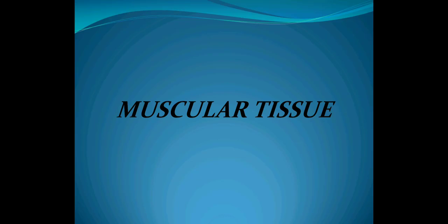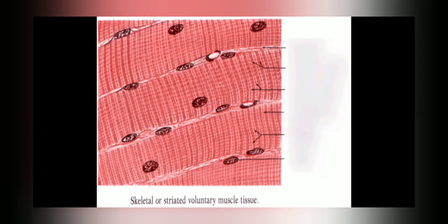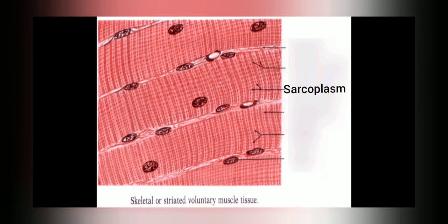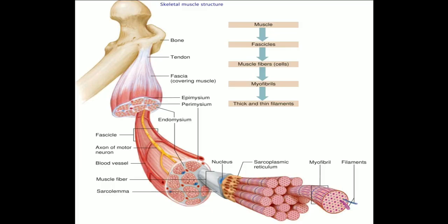Coming to the next part — muscular tissue. The cells of muscular tissue are elongated and are called muscle fibers. Each muscle fiber is covered by a membrane called sarcolemma. The cytoplasm of a muscle cell is called sarcoplasm. A large number of contractile fibrils are present in sarcoplasm, and those contractile fibrils are called myofibrils. Myofibrils are made up of proteins actin and myosin.